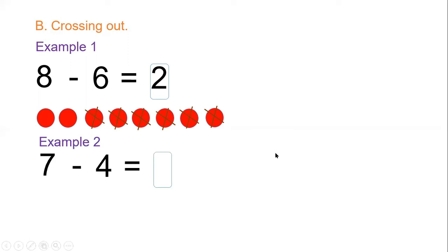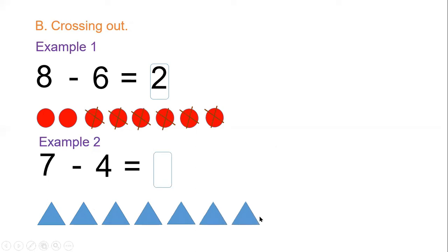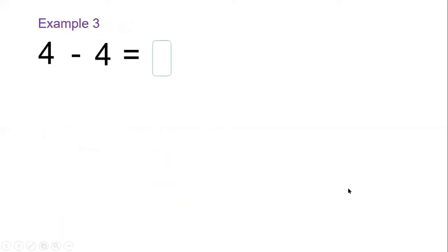Now we look at seven minus four. Let's have seven pictures: one, two, three, four, five, six, and seven. Now let us cross out four: one, two, three, and four. So we have three left. What about four minus four? Let's have one, two, three, and four.